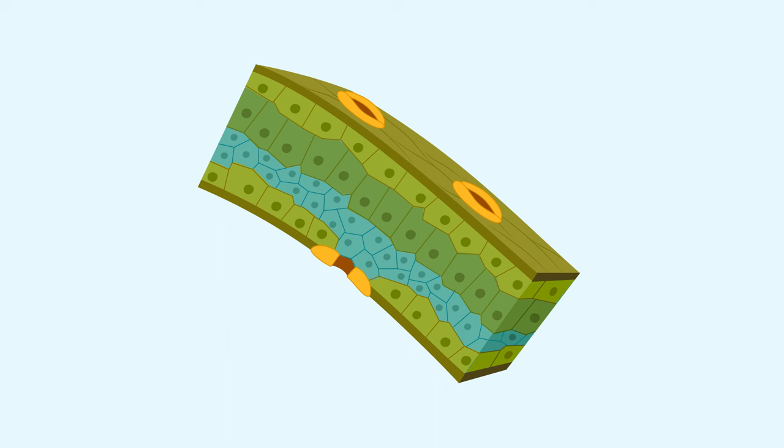Plants actually absorb this carbon dioxide from the air through small openings in their leaves, or other tissues. These openings are called stomata.